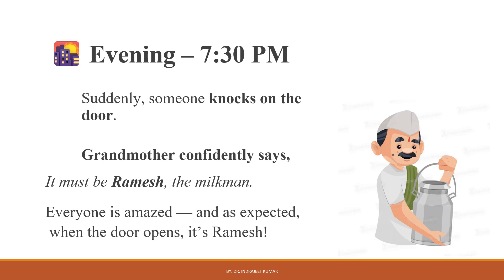Now the question arises: how is she predicting correctly each and every time? Basically, she is using her experience, observation of patterns, time of the day, and past events to predict correctly. This is exactly what AI tries to replicate — using data and patterns to make decisions or predictions.